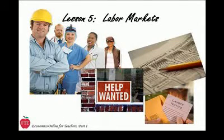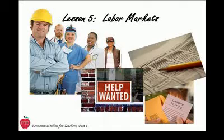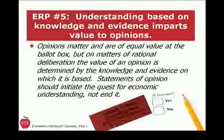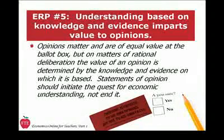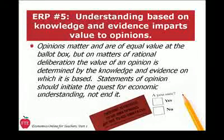The final lesson in EOFT 1 takes institutional analysis a step farther by examining a particular market: the market for labor. The analysis of labor markets and labor issues allows us to shift the focus from the wealth and poverty of nations to the wealth — that is, the incomes, large and small — of individuals. Understanding based on knowledge and evidence imparts value to opinions. In other words, economic reasoning proposition number 5 says crossing your arms and saying 'that's my opinion' isn't the economic way of thinking. This fifth economic reasoning proposition is essential to all reasoning and analysis, not just economics.